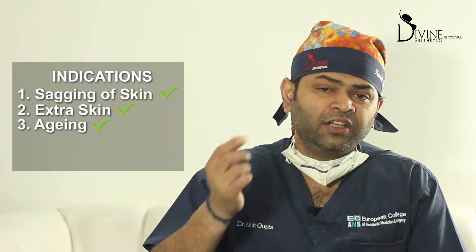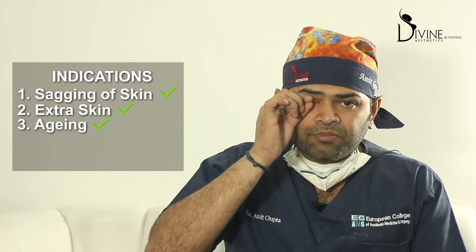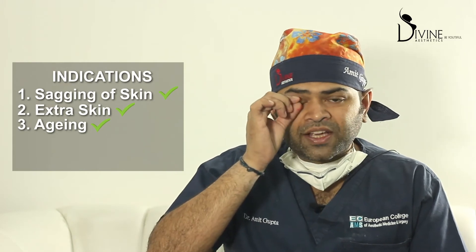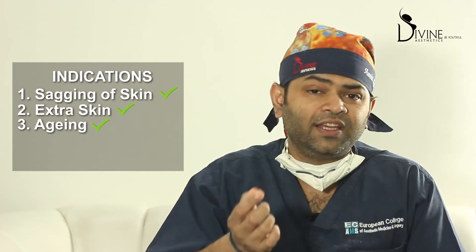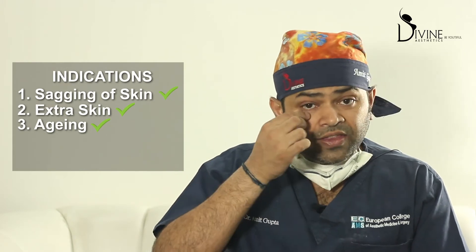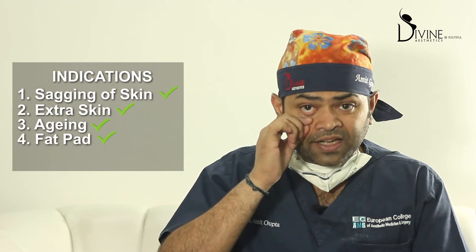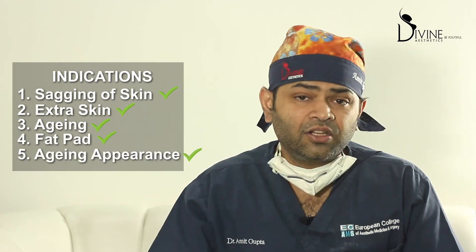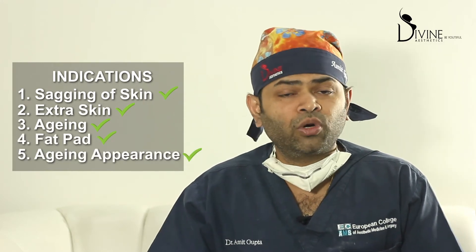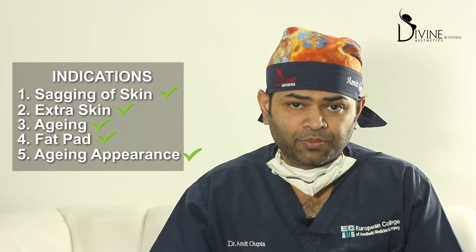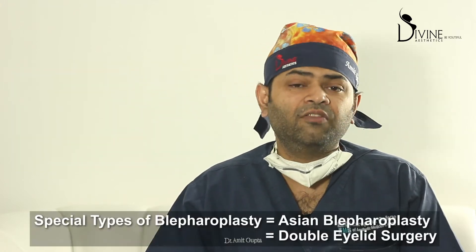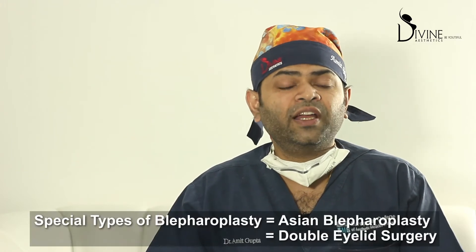What are the indications — in which patients do we do blepharoplasty? First, where there is sagging of skin or extra skin due to aging. Many patients also have extra skin on the upper lid. Then, on the lower eyelid, extra fat bags and a hanging, aged appearance are indications for the procedure.